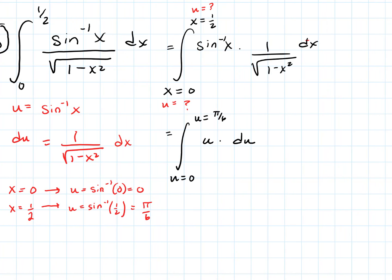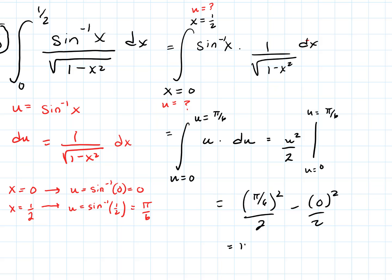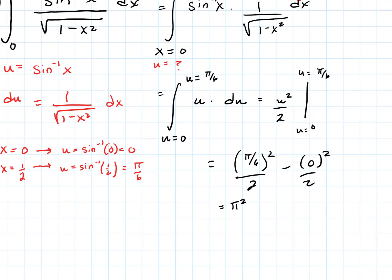Since I adjusted everything to u, I never have to go back in terms of x. The substitution gives u · du, so the integral is u²/2 evaluated from 0 to π/6. Plugging in: (π/6)²/2 − 0²/2 = (π²/36)/2 = π²/72. That's the result.